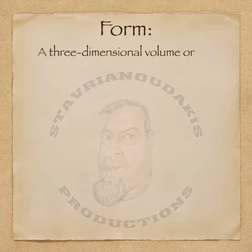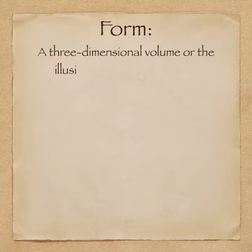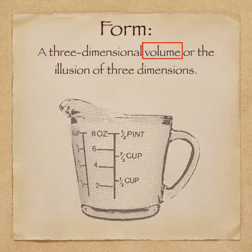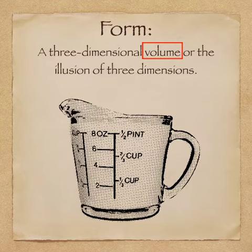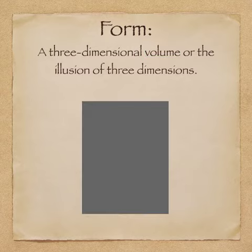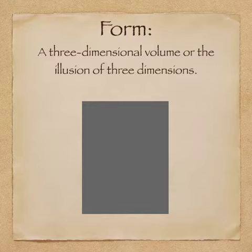Form is defined as a three-dimensional volume or the illusion of three dimensions. Let's first take a look at the word volume. In this case, it refers to a container, much like a jar or a box. This rectangle is a two-dimensional container. It's two-dimensional because it only has two dimensions: width and height.